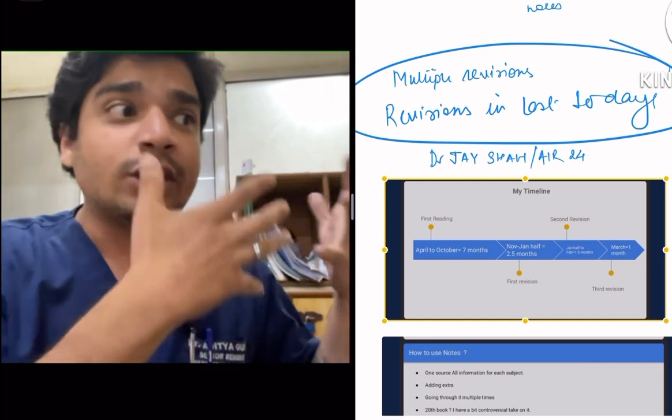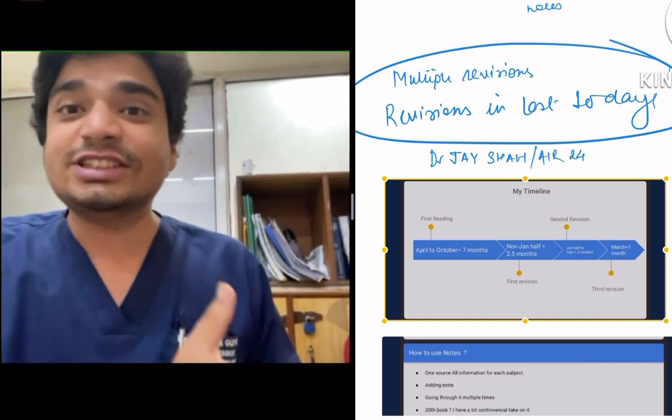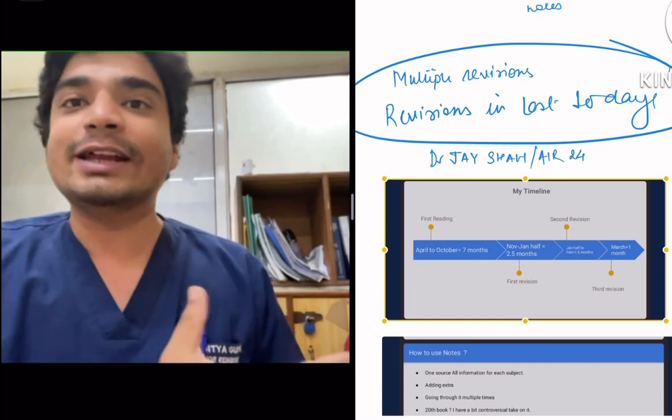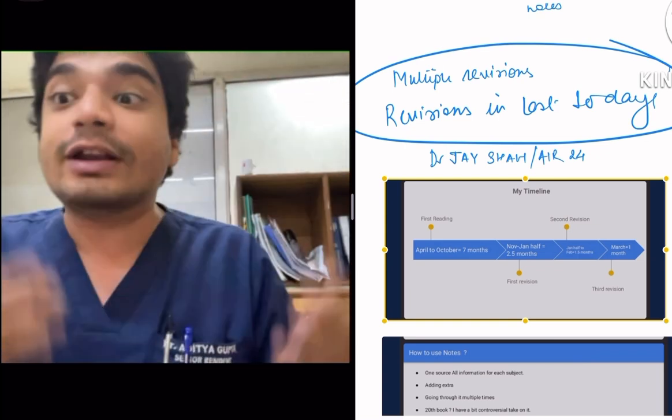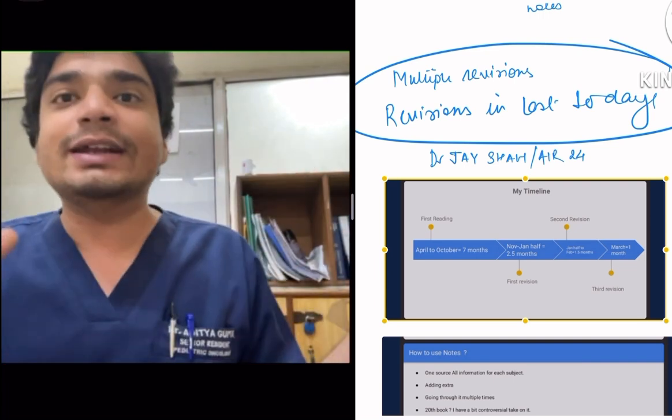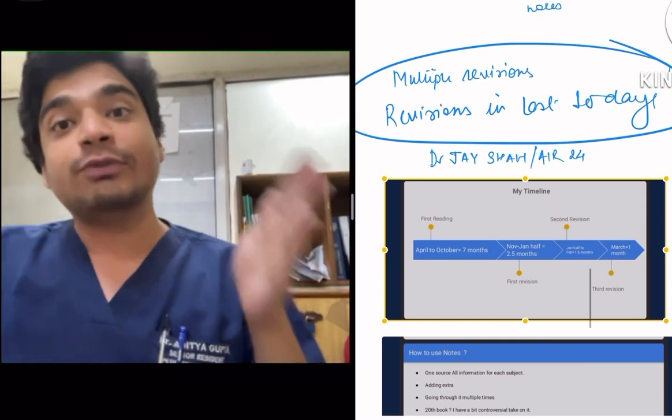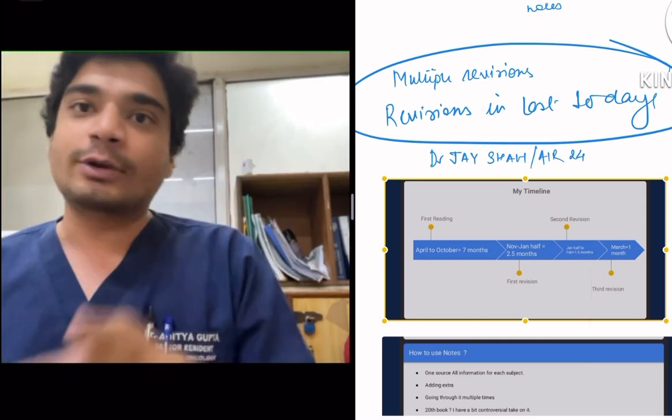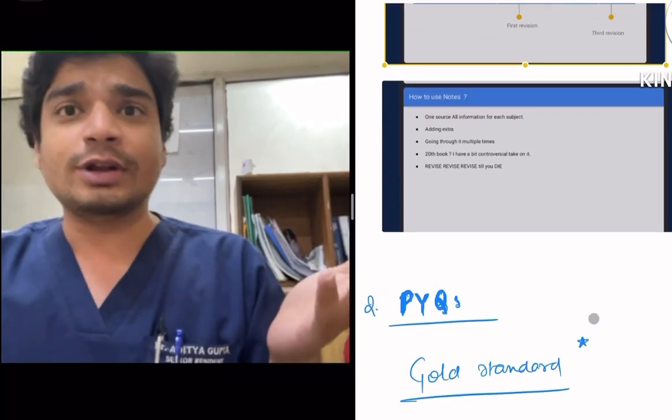If you are having an internship which is very hectic, then obviously the first reading cannot be completed in three, three and a half months. That will take four to five months. Then do the next revisions rapidly, try to finish them in a much more rapid pace. The first reading can take time, but the other revisions should then be shorter in time. But the essence stays the same, irrespective of the person who cracked the exam and got a good rank. They did multiple revisions.